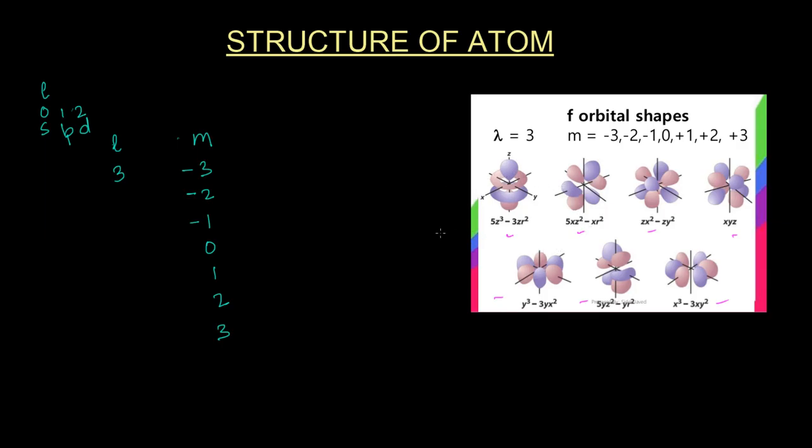But we should know that there are 7 of them and they have kind of 6 balloons pointing in different directions, with these being the nodal planes. Wherever you see a gap, that's a nodal plane.